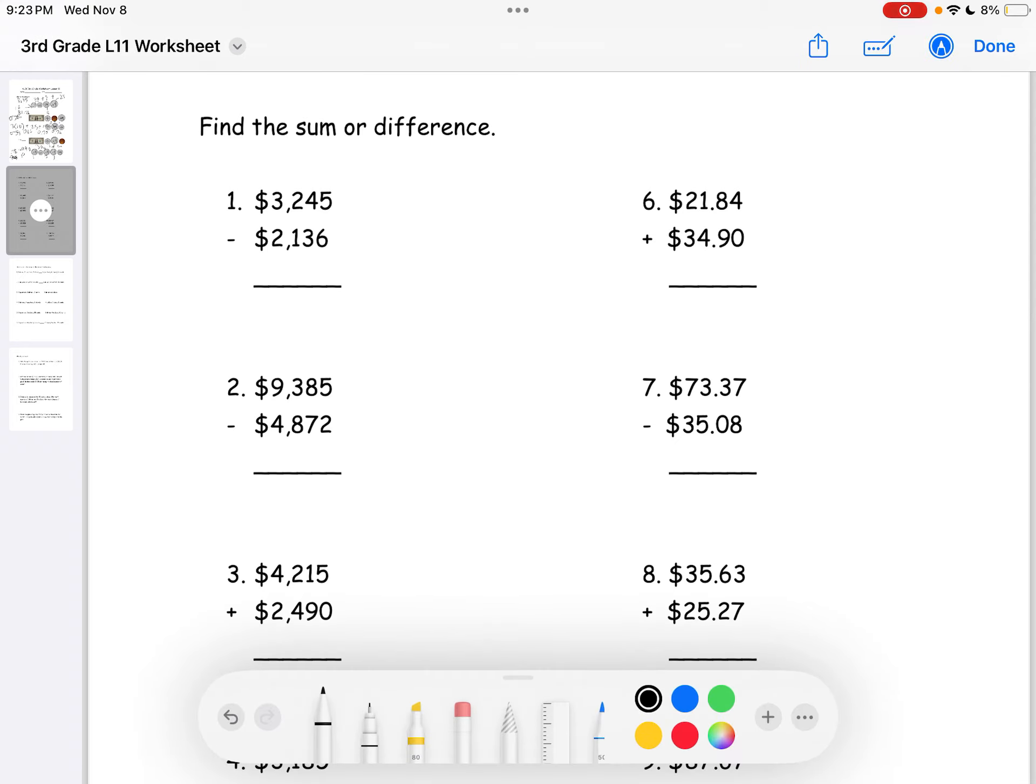Page 2. We start off with number 1. Find the sum or difference. 5 minus 6. You can't do that. So, change the 4. I'm going to make the 5 into 15. So, it will be 9. 3 minus 3 is 0. 2 minus 1 is 1. 3 minus 2 is 1. So, the answer to number 1 will be $1,109.